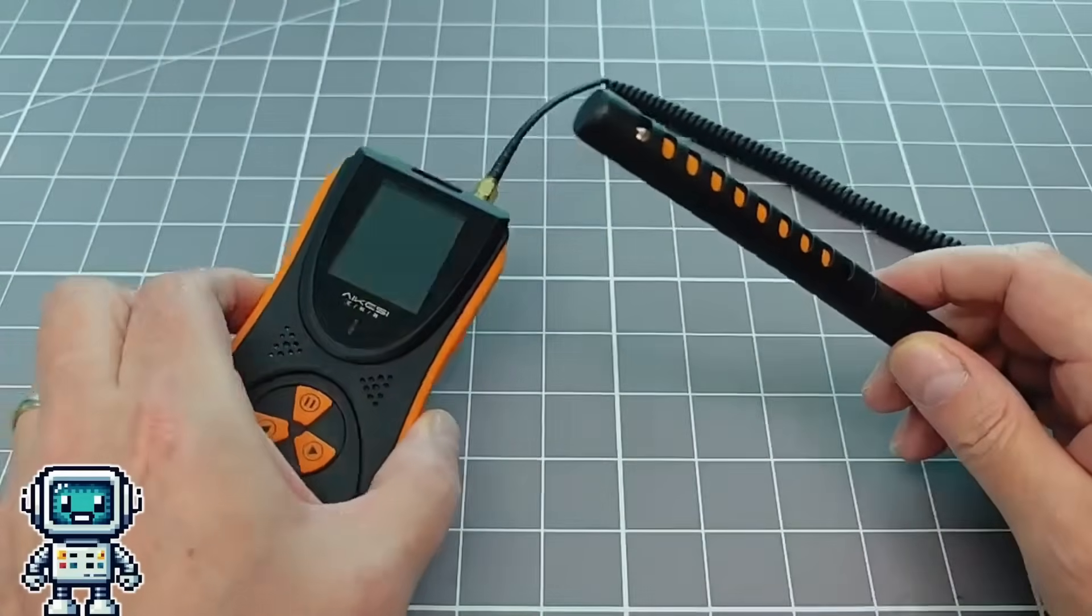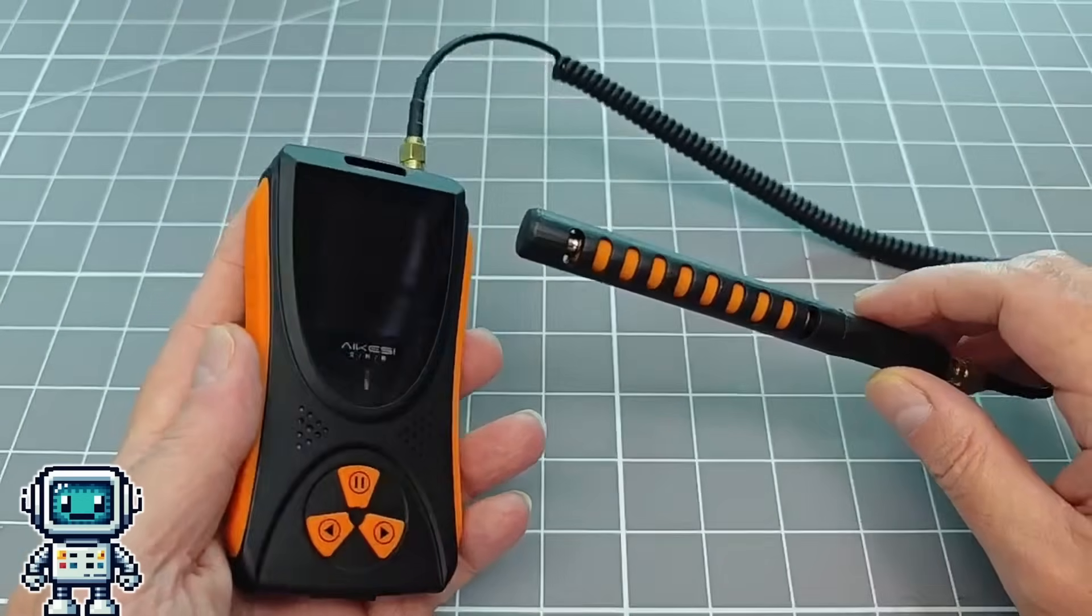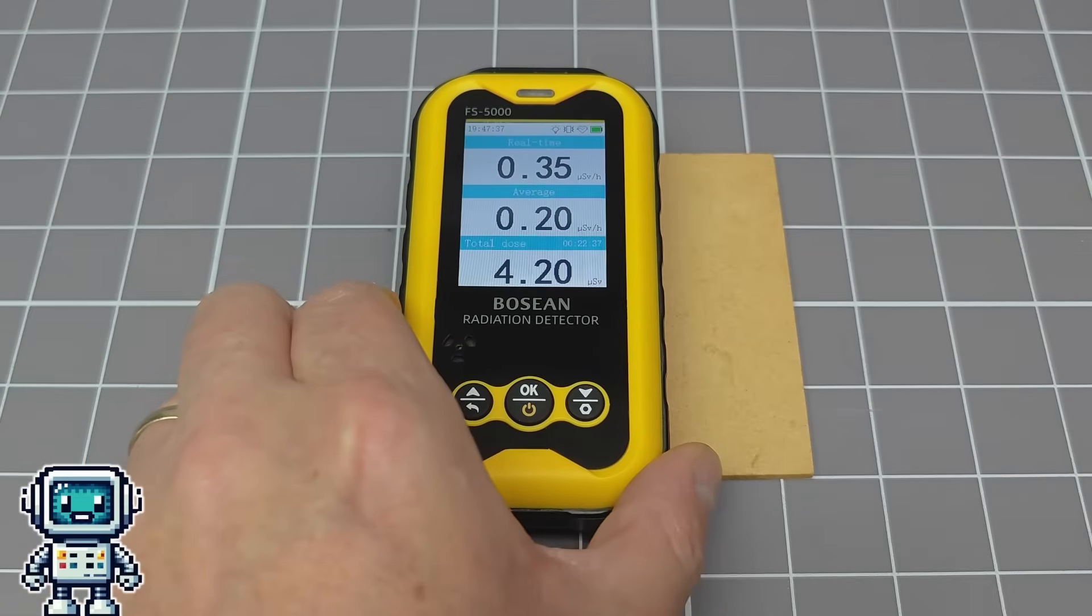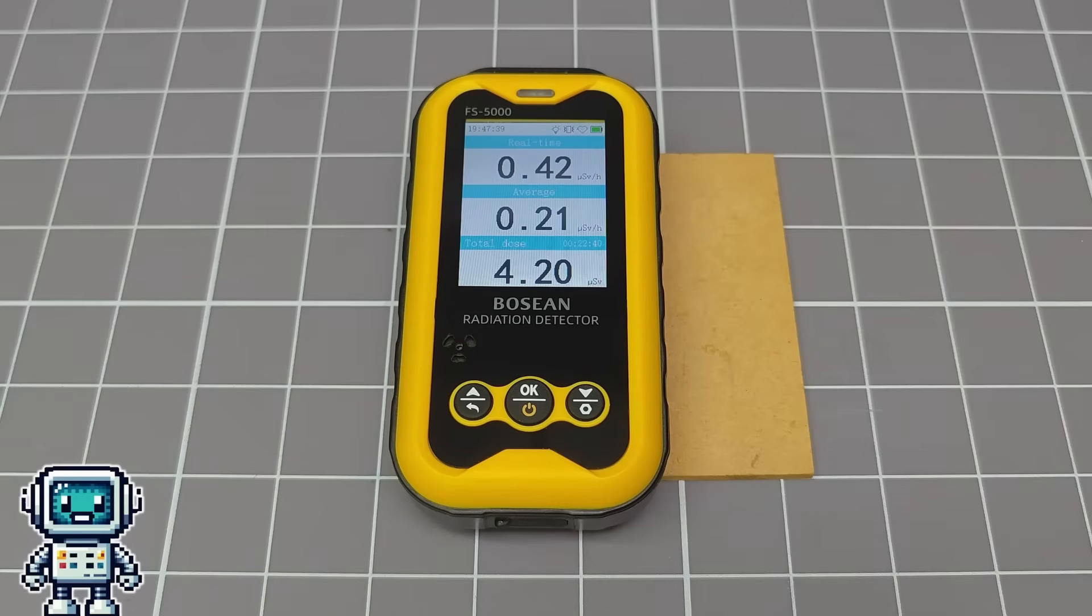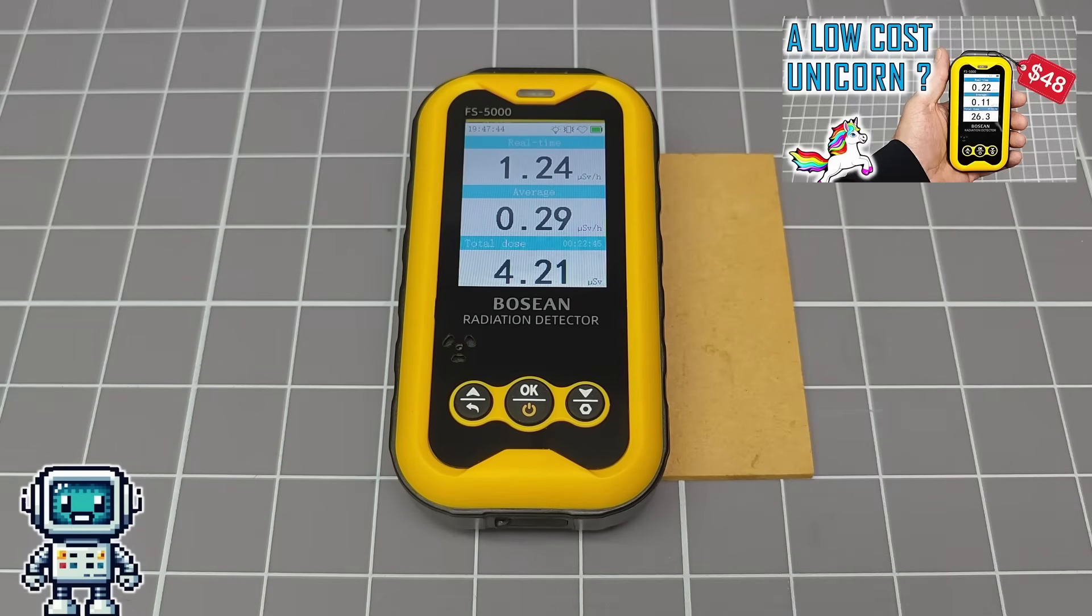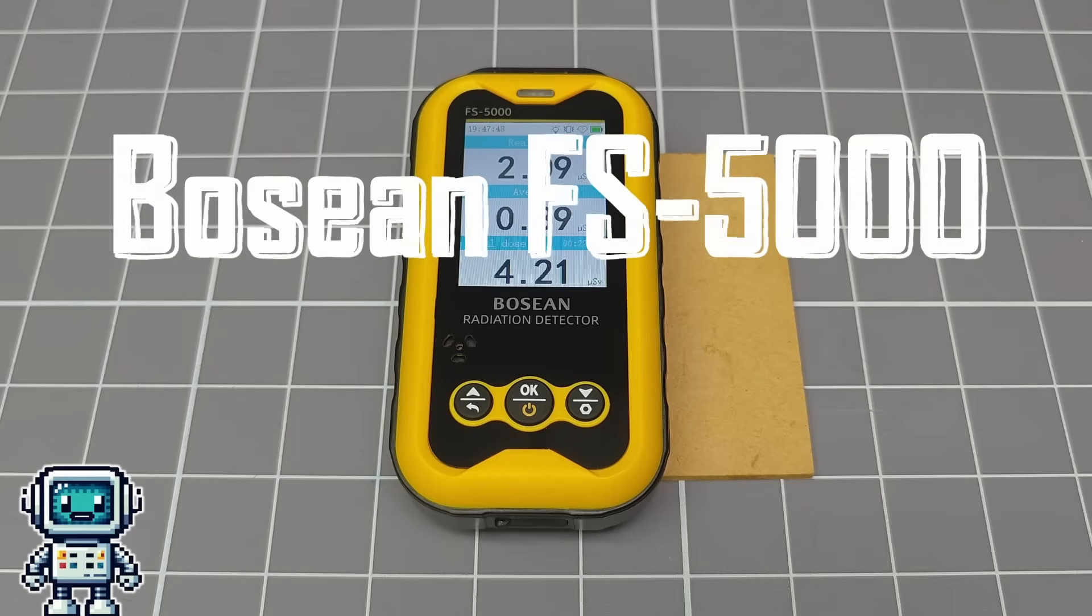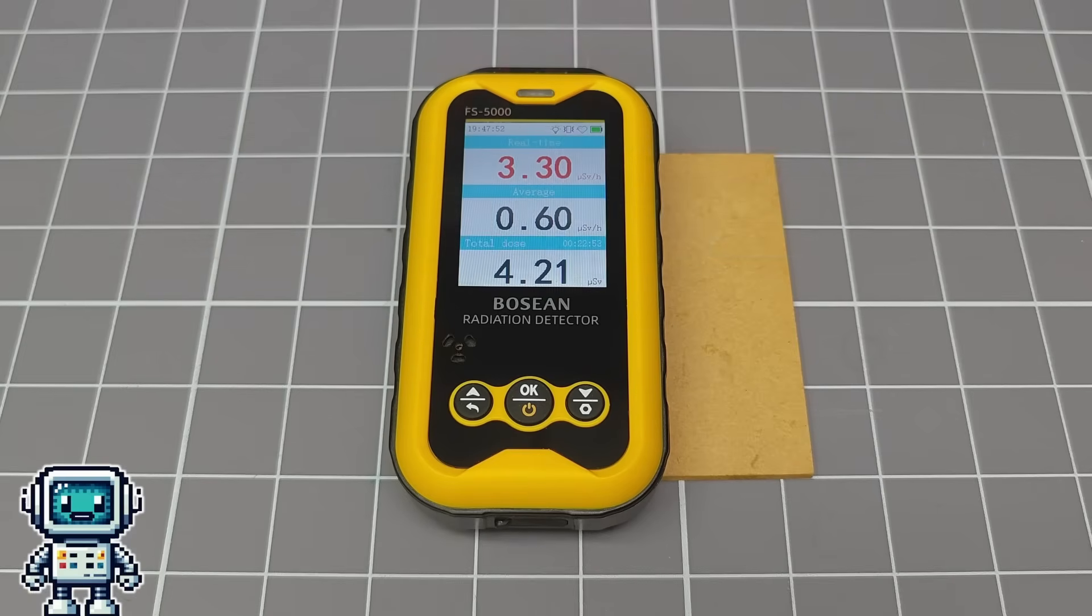We have actually done a similar type of conversion before, we added an external probe to this perfectly shitty HFS-10. This time we are going to start with a better model of Geiger counter, one that we have reviewed and found to be about the best available, at least for a sub-$50 detector. This is the Bosian FS5000. It is by no means a perfect radiation detector, but it is pretty suitable for this kind of project. Best of all, it won't cost us a king's ransom if we screw it up.